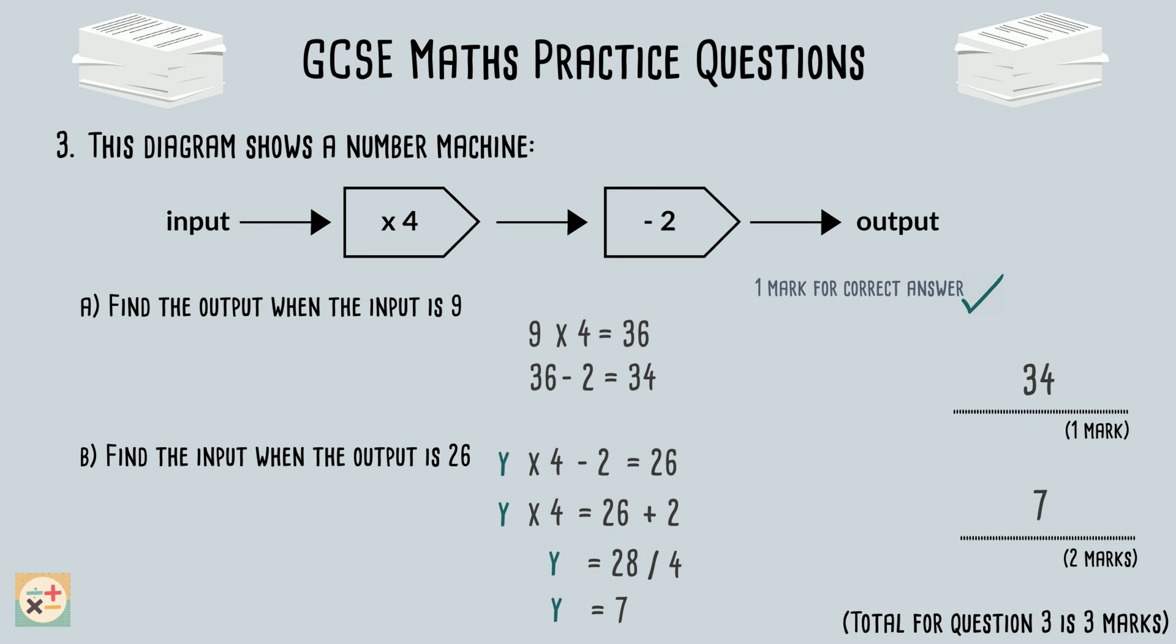This part of the question is worth two marks. One mark is for the correct answer of 7. And the other mark is for showing your working out, in particular, showing the reverse of the operations in the number machine. You could have solved this question in numerous ways, using algebra, reverse operations, or diagrams, as long as the examiner can see that you have added 2 to 26, and then divided by 4.